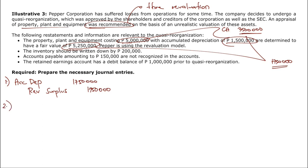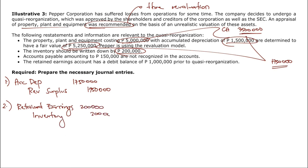Second bullet: inventory should be written down by 200,000. Since any adjustment is reflected in retained earnings, the entry is: debit retained earnings, credit inventory for 200,000. Third bullet: accounts payable of 150,000 are unrecorded, so: debit retained earnings, credit accounts payable for 150,000.